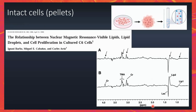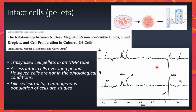A better condition would be to assess the cells by themselves: you take the cells, spin them down, put them in an MR tube, and acquire the spectrum. Here is a study from Carlos Ares showing that not only can you assess these cells, but you can also assess dynamic changes over a period of time — here they showed how the lipid resonance changed over time. Like cell extracts, the problem is that you are looking at a homogeneous population of cells, so again, not quite the human condition.